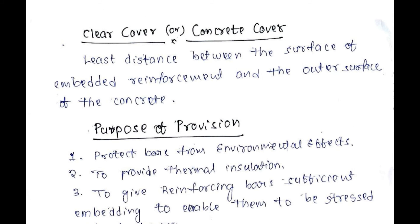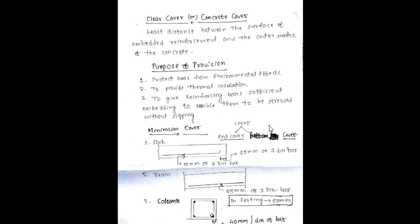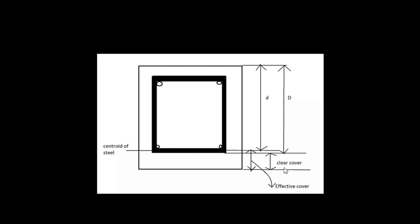You may have heard the name effective cover. What is the difference between clear cover and effective cover? Effective cover is the distance from the center of the bar to the outer surface of the concrete. Here you can see that clear cover is the distance from the outer surface of the bar to the outer surface of the concrete.